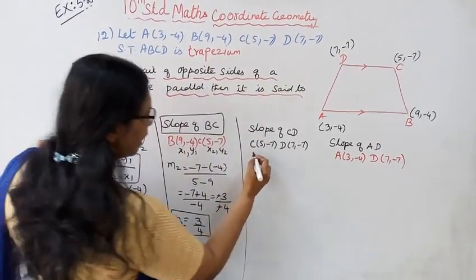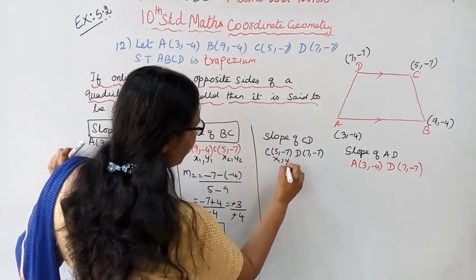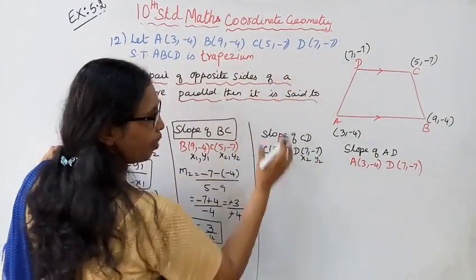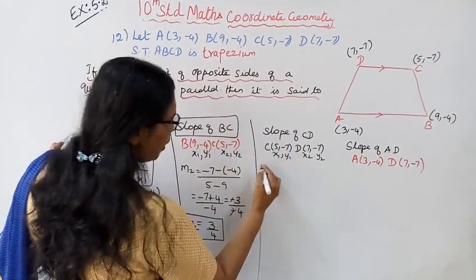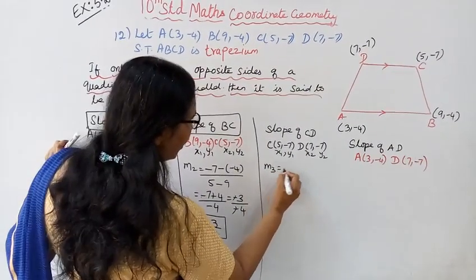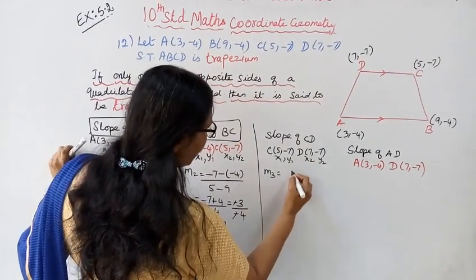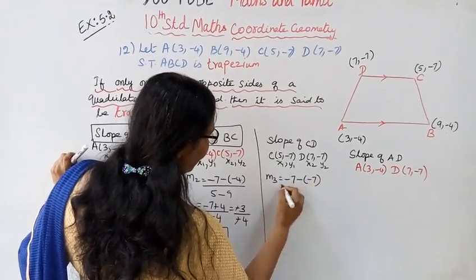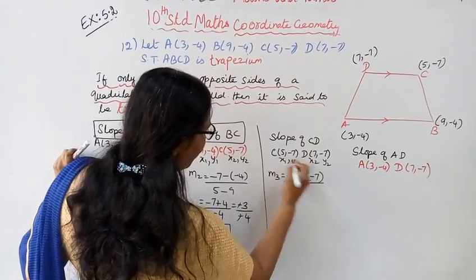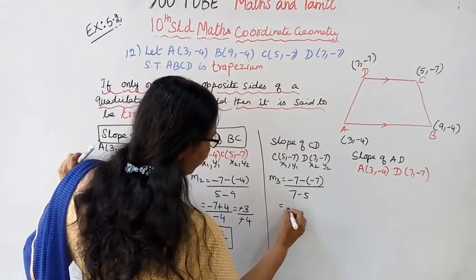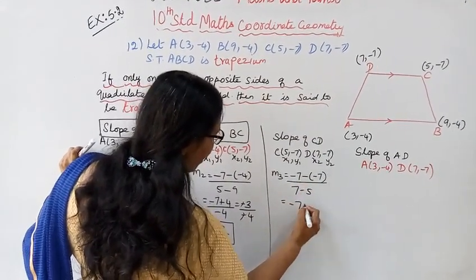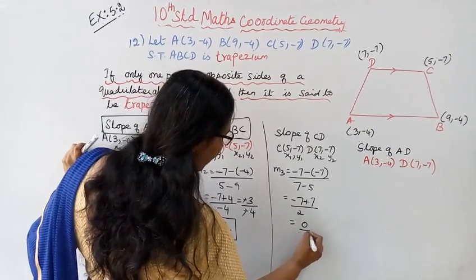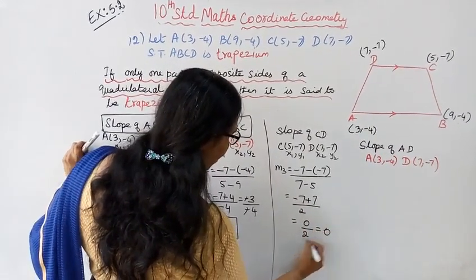Slope of CD: points C(5, -7) and D(7, -7). Using y2 minus y1 by x2 minus x1: (-7 minus (-7)) divided by (7 minus 5) = (-7 + 7) / 2 = 0 / 2 = 0. So M3, slope of CD, equals 0.